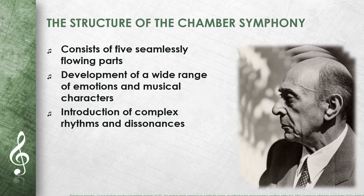The Chamber Symphony No. 1 consists of five parts that merge seamlessly into one another: slow introductory theme, fast scherzo, slow trio, further scherzo, and a concluding fast section. These parts are thematically linked and form a unified, through-composed structure. Schoenberg uses the form to develop a wide range of emotions and musical characters, introducing more complex rhythms and dissonances characteristic of his later works.